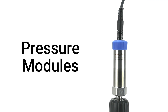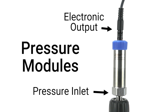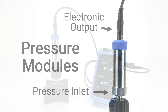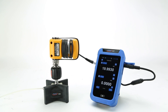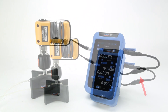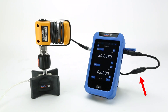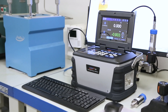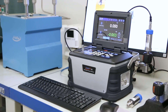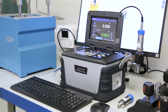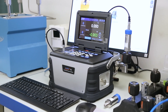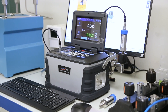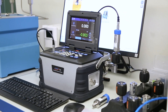Pressure modules convert a pressure signal into an electrical signal to be read by an external device or software. These signals are often proprietary to the manufacturer of the module and require a specific cable to read the signal. High accuracy pressure modules are often used as pressure references in calibration, since their electronic output can be easily read and recorded by lab software or field calibrators.